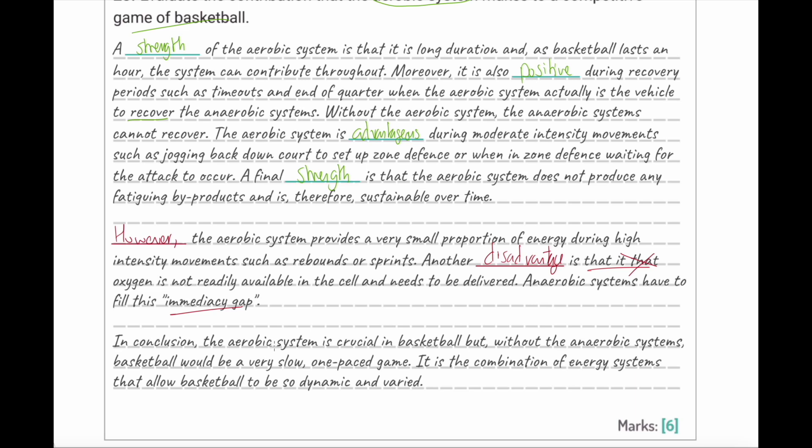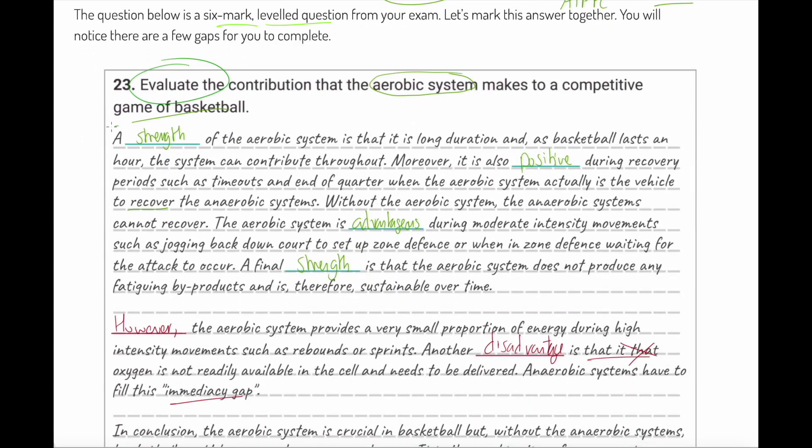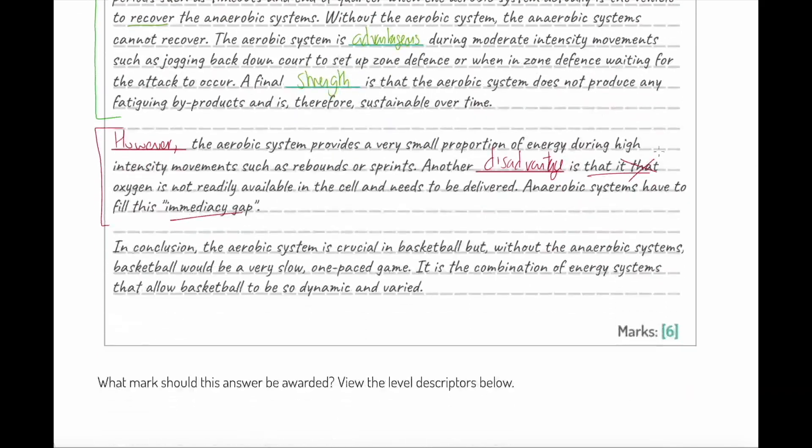Notice at the end we've got a conclusion: In conclusion, the aerobic system is crucial in basketball, but without the anaerobic systems, basketball would be a very slow one-paced game. It is a combination of energy systems that allow basketball to be so dynamic and varied. My point is: I have clearly been asked an evaluate question. I have done a series of strengths, positives, evaluative pluses. I have then gone on to do negatives. Maybe I could have done more. Then finally, whenever we evaluate something, we should consider that we need to conclude and bring that summary to a judgment.